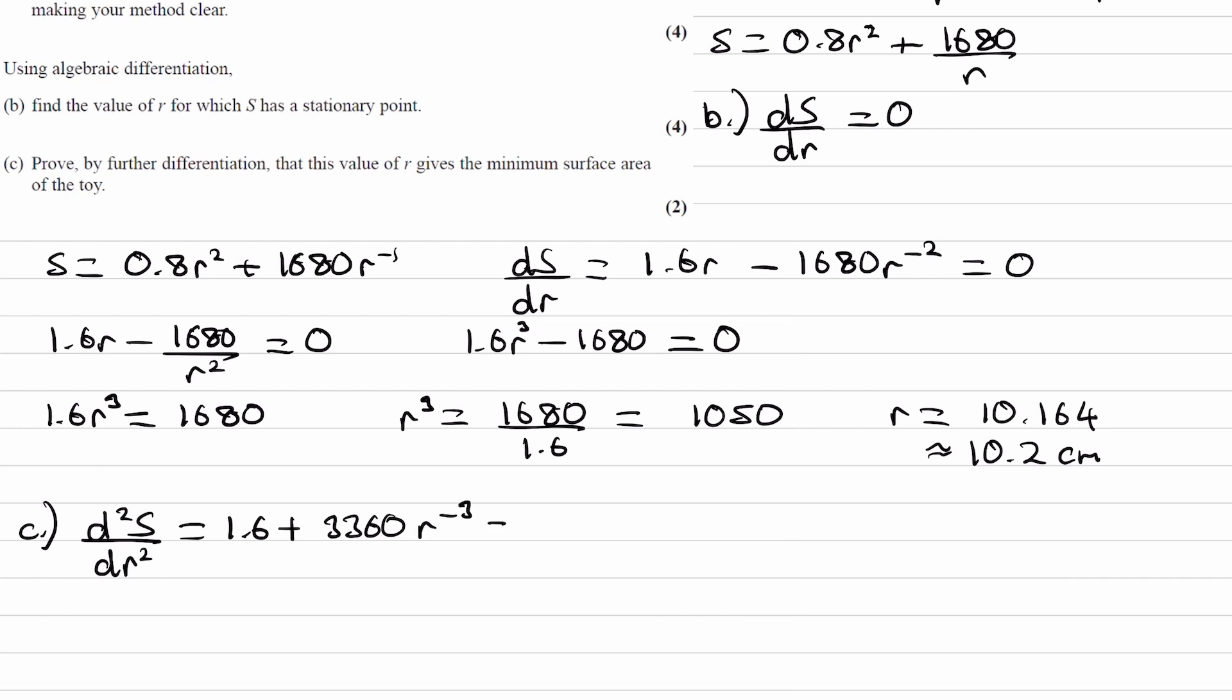We're not going to be setting this equal to 0 this time. Now what we do is we would sub in the value of r that we got before. So the value of r would have a stationary point. So put in r equals 10.2, and this gives me 4.8.